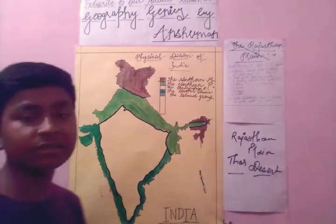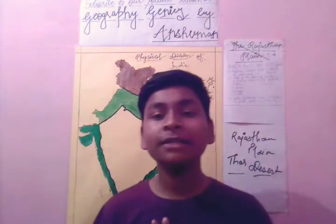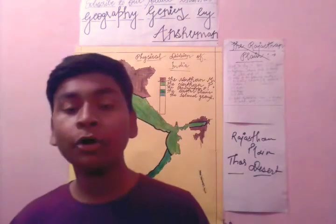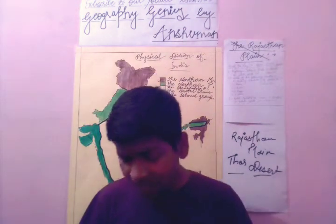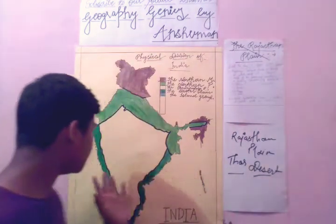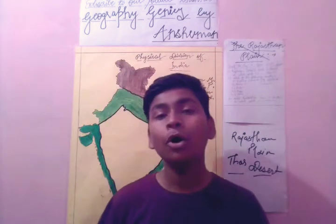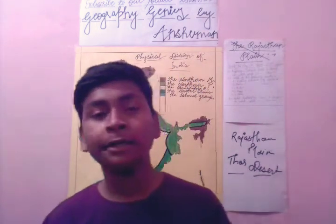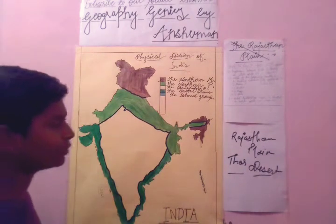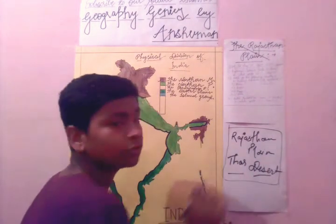So that was all about the Rajasthan Plain. To recap: Rajasthan Plain is also known as the Thar Desert or the Great Indian Desert. It has short seasonal streams that can't reach the Arabian Sea, and that is why it remains sandy, rocky, and hot throughout the year. Rajasthan Plain has been finished.